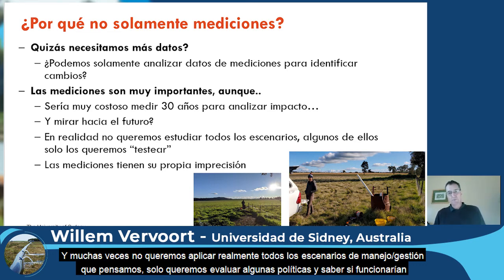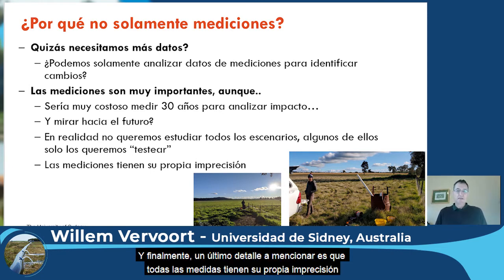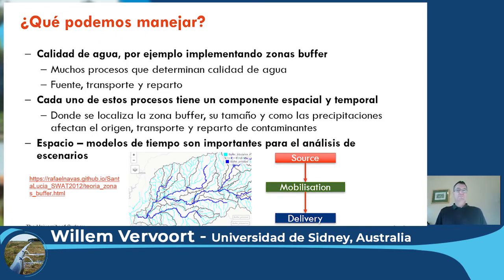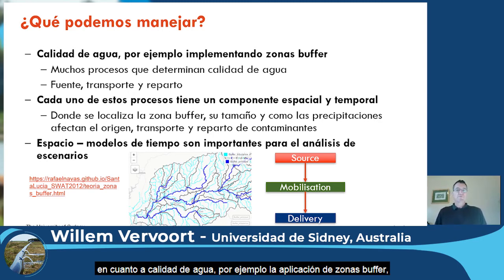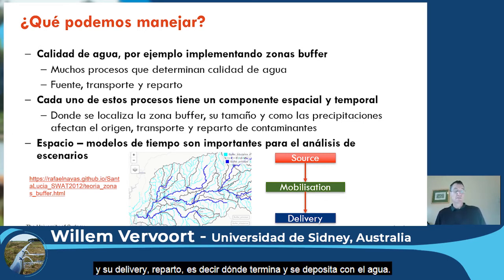Sometimes we don't want to apply all scenarios or policies we've thought about — we just want to test a few policies and know whether they will work. And finally, all measurements come with their own inaccuracy. If you think about water quality, for example the example of buffer zones, there are many processes that determine water quality. We generally think about this in terms of source — what is the source of the contaminant — mobilization, how it is moved through the landscape, and delivery, where it ends up and where it actually drops out of the water. Each of these processes has both a space and a time component.